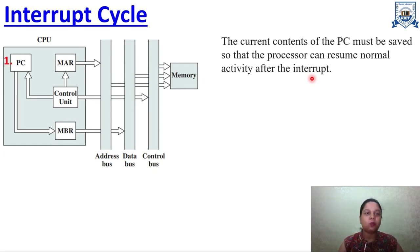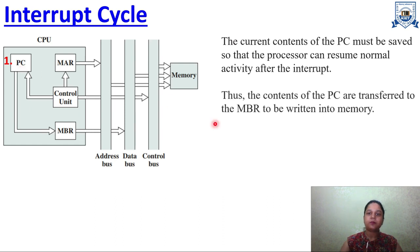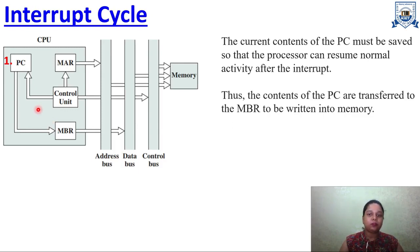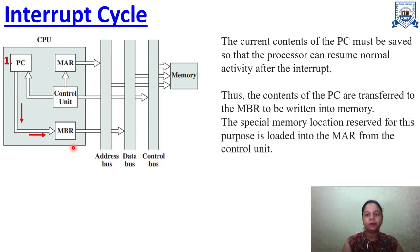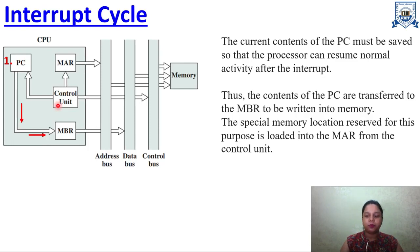The instruction address is always in the Program Counter. The contents of the PC are transferred to MBR to be written into memory. To save the current content of PC, we use the MBR register — PC contents are transferred to MBR. Then, a special memory location reserved for this purpose is loaded into MAR from the control unit. The control unit helps store the address and the content of the current instruction; MBR transfers the address to the control unit and it is stored in the MAR register.